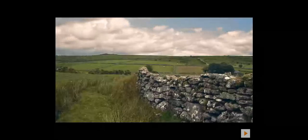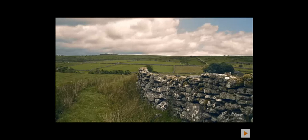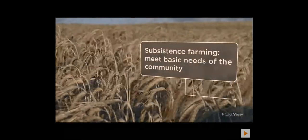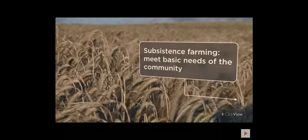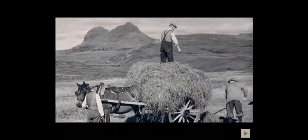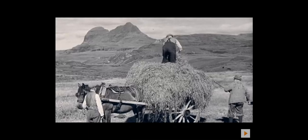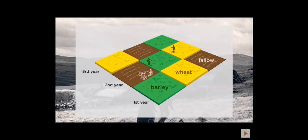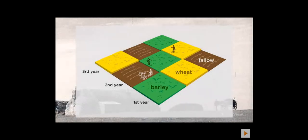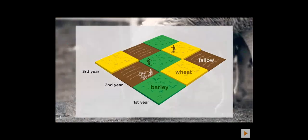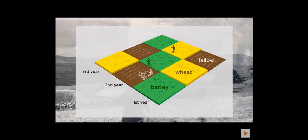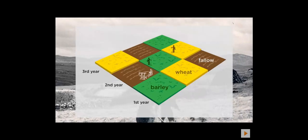Prior to the Industrial Revolution, most people in Britain lived in open-field villages. They relied on subsistence farming, which produced enough food for the peasants or tenants of the landowner, but little if any extra. Farmers used a system of rotating crops over three fields. Each year, two fields were used to grow crops like barley and wheat, while the third would lie fallow — left unplanted — to allow the soil to replenish lost nutrients. Livestock would graze in the fallow field, helping to fertilize the soil.